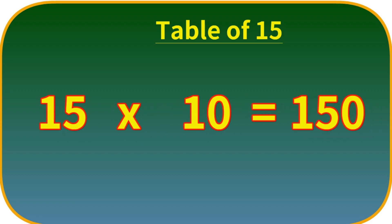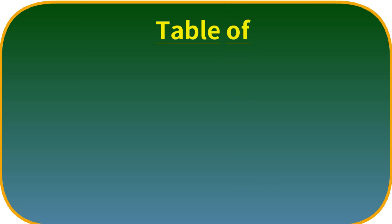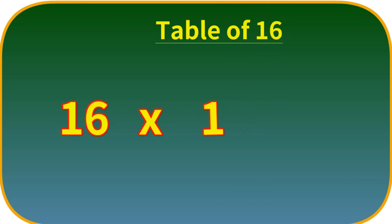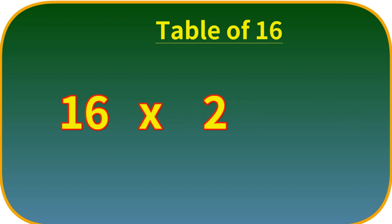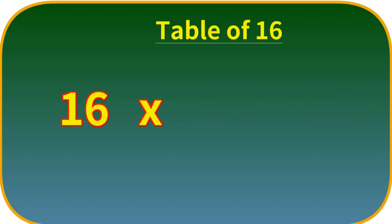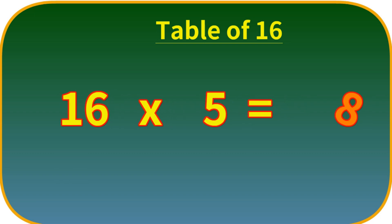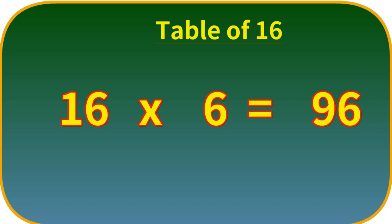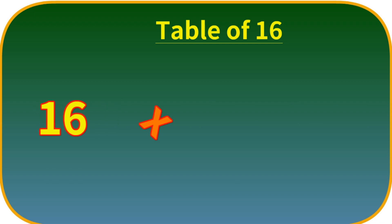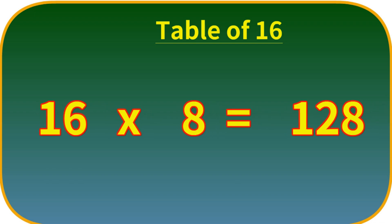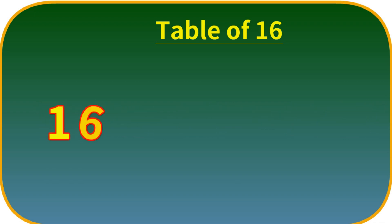15 tens are 150. Table of 16. 16 ones are 16. 16 twos are 32. 16 threes are 48. 16 fours are 64. 16 fives are 80. 16 sixes are 96. 16 sevens are 112. 16 eights are 128. 16 nines are 144.